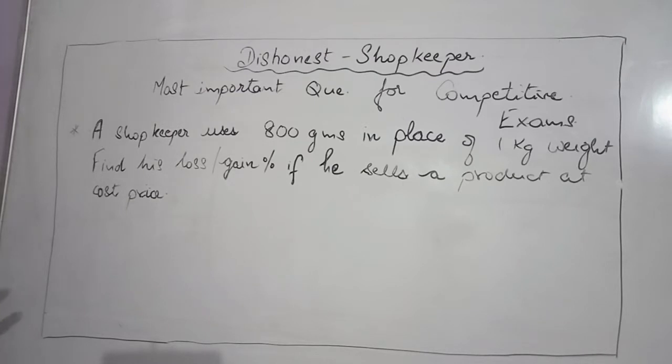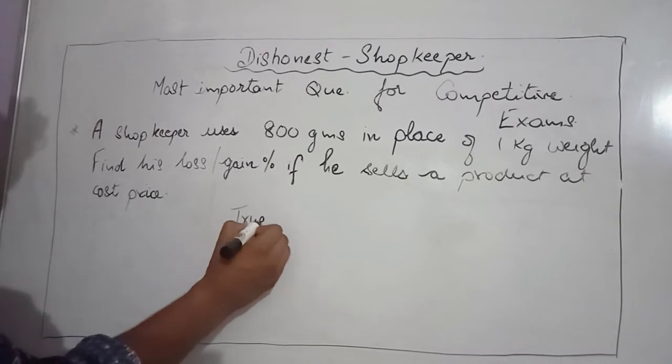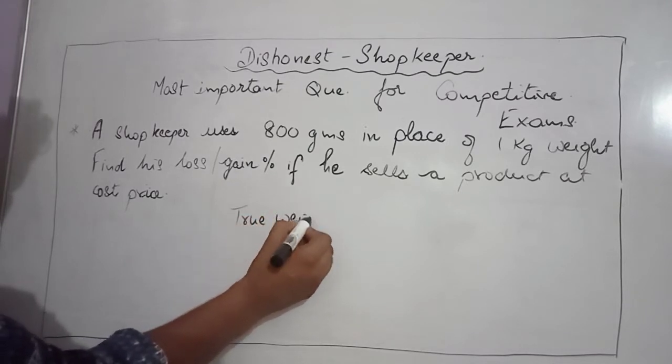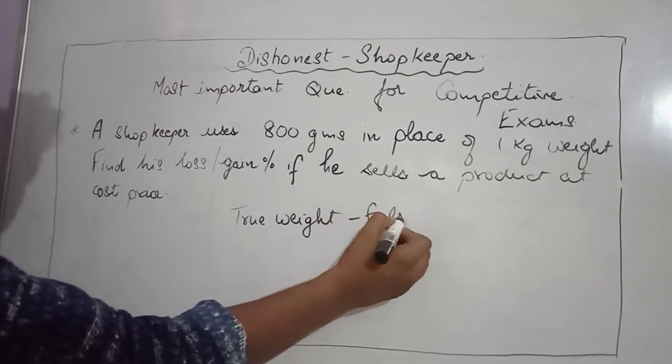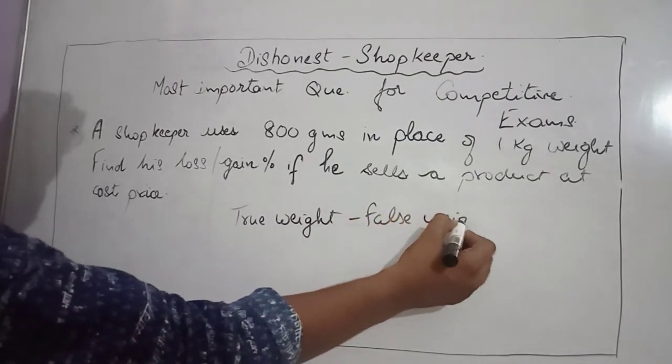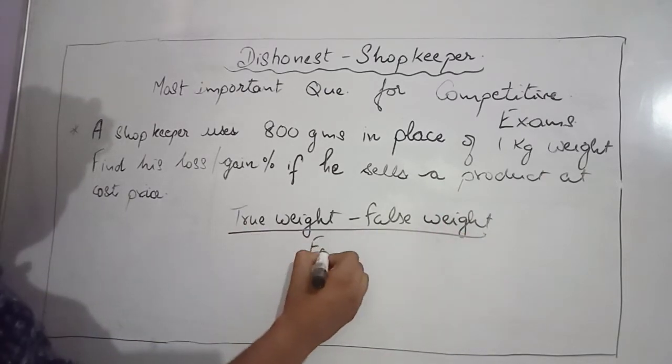We have a formula: true weight minus false weight upon false weight.